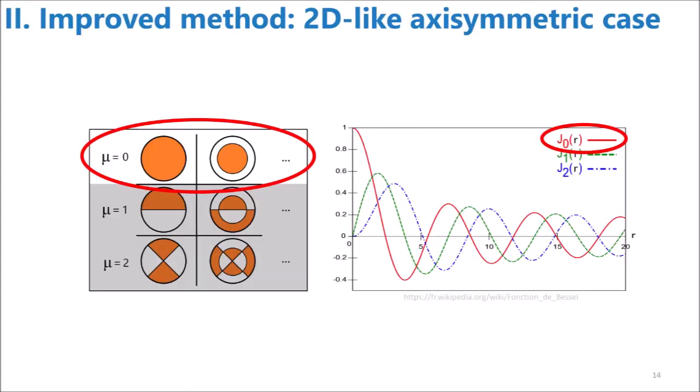First, let us consider an axisymmetric geometry, and let us focus on a single azimuthal order. So, the problem becomes 2D-like. For example, we take the first azimuthal order. Note that the improved method in 2D Cartesian coordinates has already been described, so this first axisymmetric case only surpasses the literature a little bit. The biggest progress will be discussed later in the presentation.